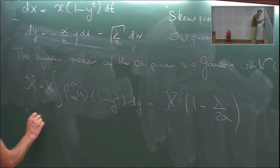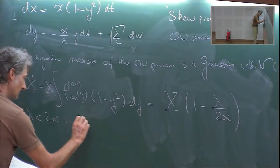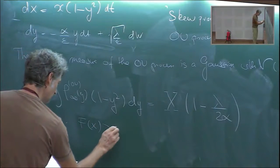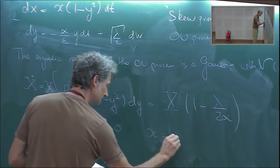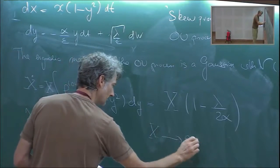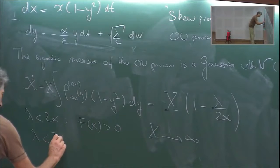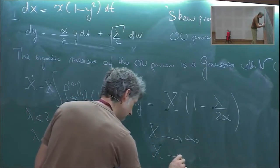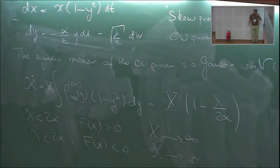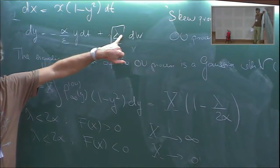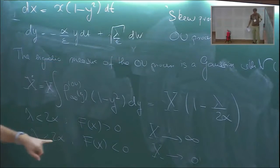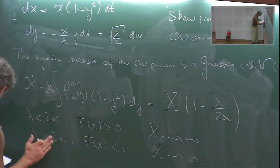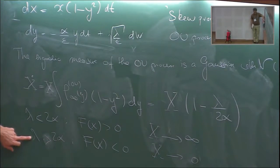If λ < 2α, the average vector field is positive, so x goes to infinity. If λ > 2α, the average vector field is negative and x goes to zero. So here λ gives the noise intensity — when it's very noisy, we stabilize the system. Noise can be stabilizing.